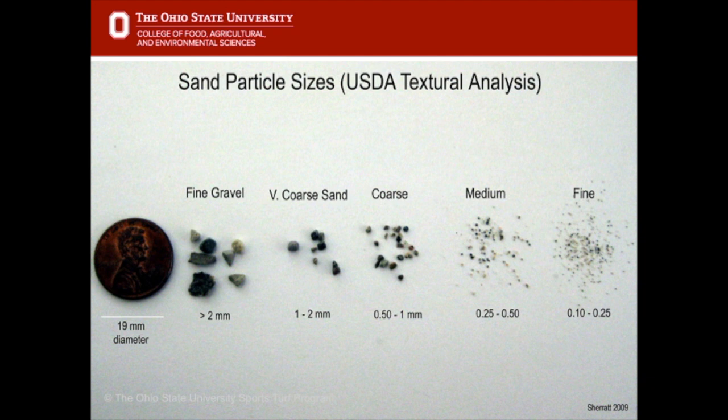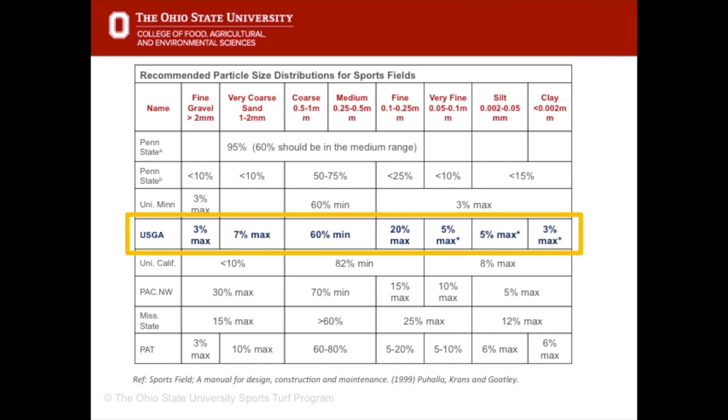Basically, the coarser the sand, the less stable or firm it is. A common top dressing sand used on native soils would adhere to the United States Golf Association, or USGA, sand highlighted in yellow. With 60% of the sand particles in the medium coarse size range, this sand is considered a uniform medium coarse sand.